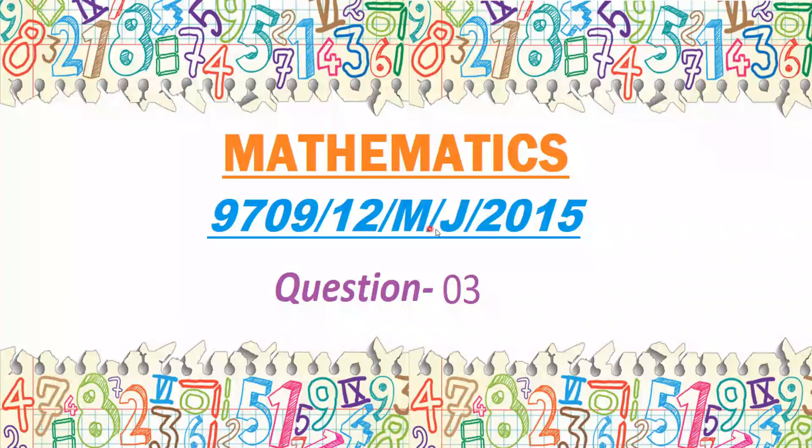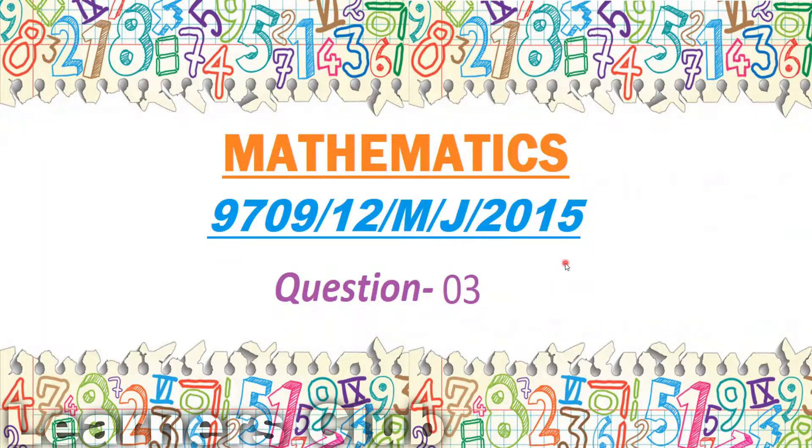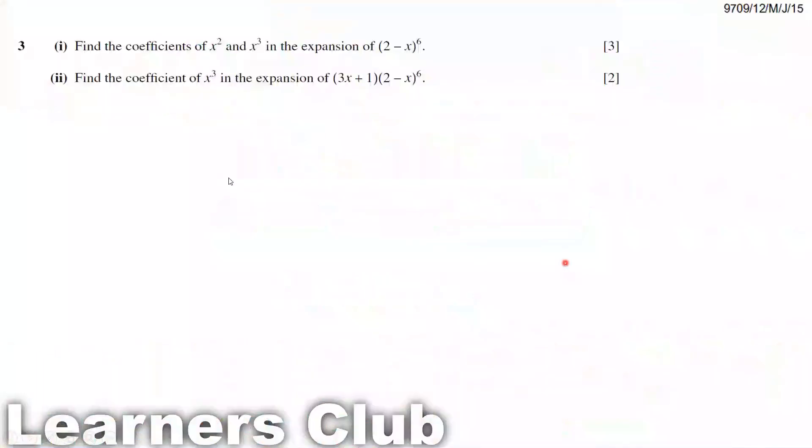Mathematics 9709 May 2015 paper 12 question 3: Find the coefficients of x squared and x cubed in the expansion of (2 minus x) to the power 6. So to find the coefficient of x squared and x cubed, we have to use the binomial formula.